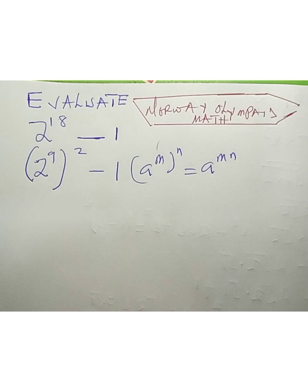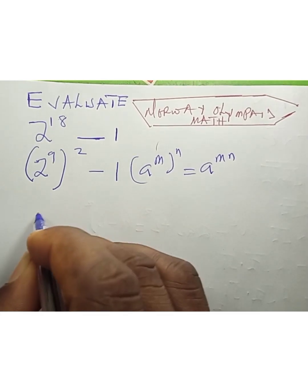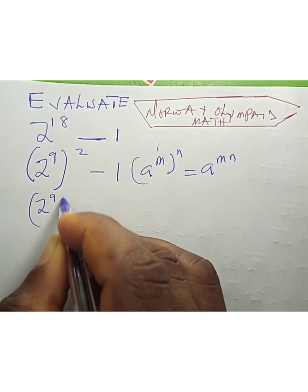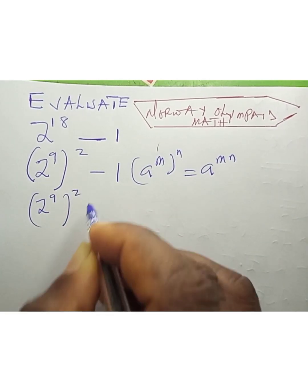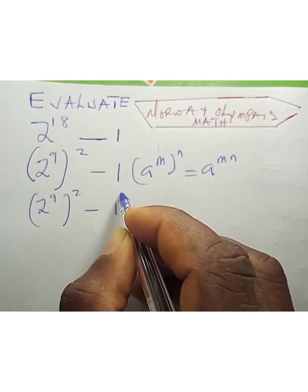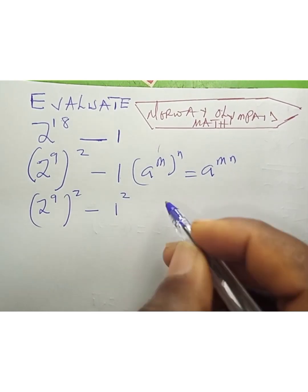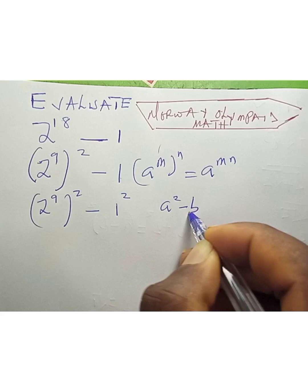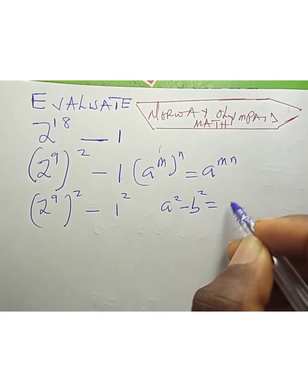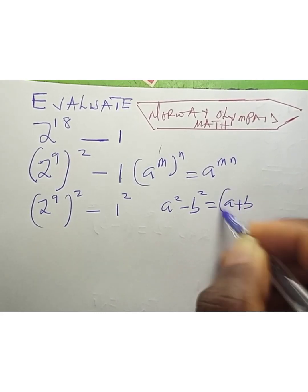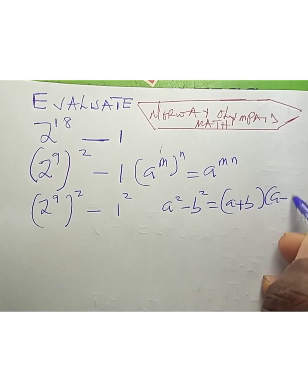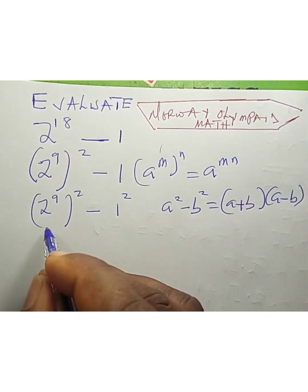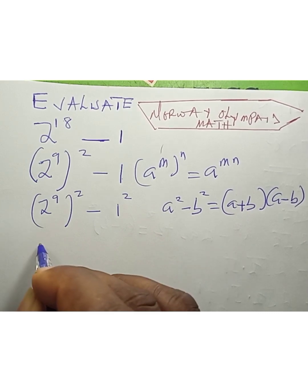Since we have that, we can write 2 raised to power 9, raised to power 2, minus 1. This can be written as 1 raised to power 2. Remember the identity: a squared minus b squared equals a plus b times a minus b.